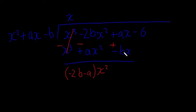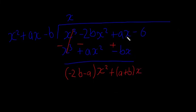We're going to do the exact same thing here — it's going to be plus (a plus b) times x, because x and x are similar terms but a and b are different, so we put those in the bracket like that. And we're going to bring the minus 6 down, so we're left with minus 6.